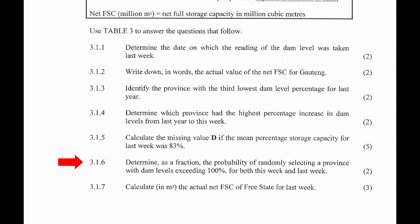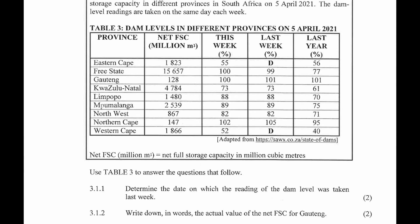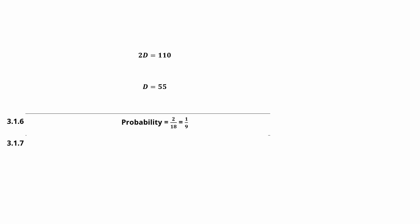Question 3.1.6: Determine as a fraction the probability of randomly selecting a province with dam levels exceeding 100 percent for both this week and last week. From the table, the number of readings that exceeded 100 for this week and last week were 3 out of 18. However, two of those readings were in the Northern Cape, so they count as one province. Therefore the probability is 2 provinces out of 18 readings, which simplifies to 1/9.